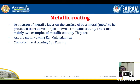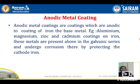What is an anodic metal coating? Anodic metal coatings are coatings which are anodic to the base metal iron. If you look at the electrochemical series, the metals which are present above iron in the electrochemical series are anodic to iron. Coating iron with any such metal is called an anodic metal coating.